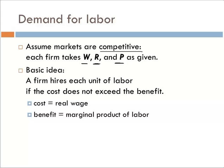To bring this down to the basic commonsense idea: the firm hires a factor, in this case labor, as long as the cost does not exceed the benefit. As long as benefits outweigh costs, we buy it; once costs exceed the benefit, we stop buying. The cost of labor is the real wage rate, and the benefit is the marginal product of labor. As long as the real wage is below MPL, hire more; if it's above, hire less — until the real wage equals the marginal product of labor.